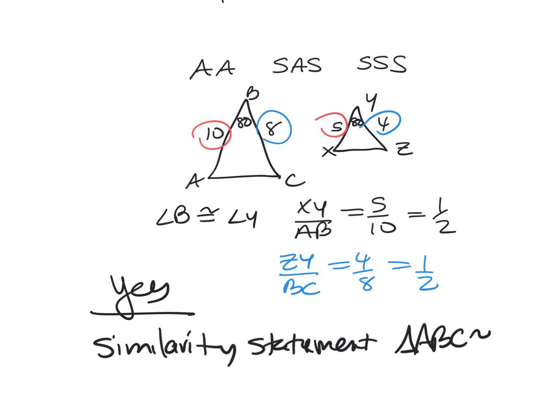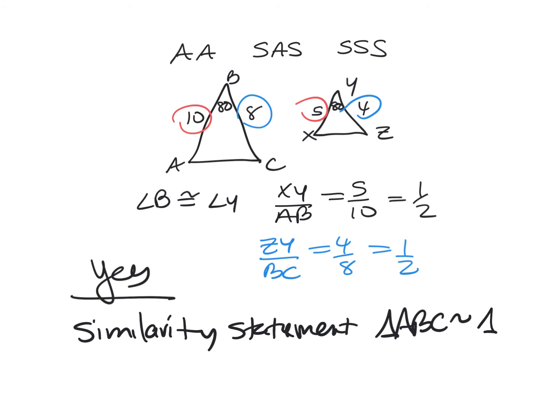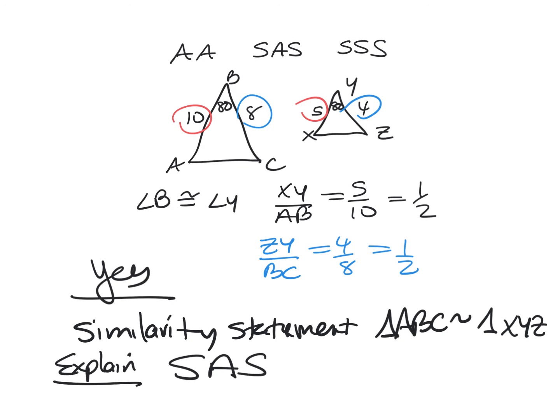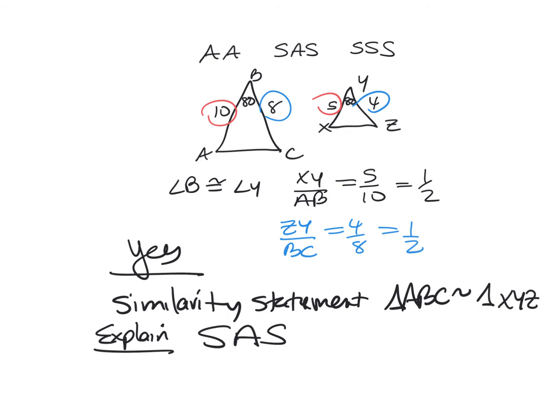The similarity statement you would write is: triangle ABC is similar to triangle XYZ. And your reason would be side-angle-side. So where it says to explain, that's what you're going to put. It's the same type of question you saw in the quiz — the only thing I'm adding is the explain part.